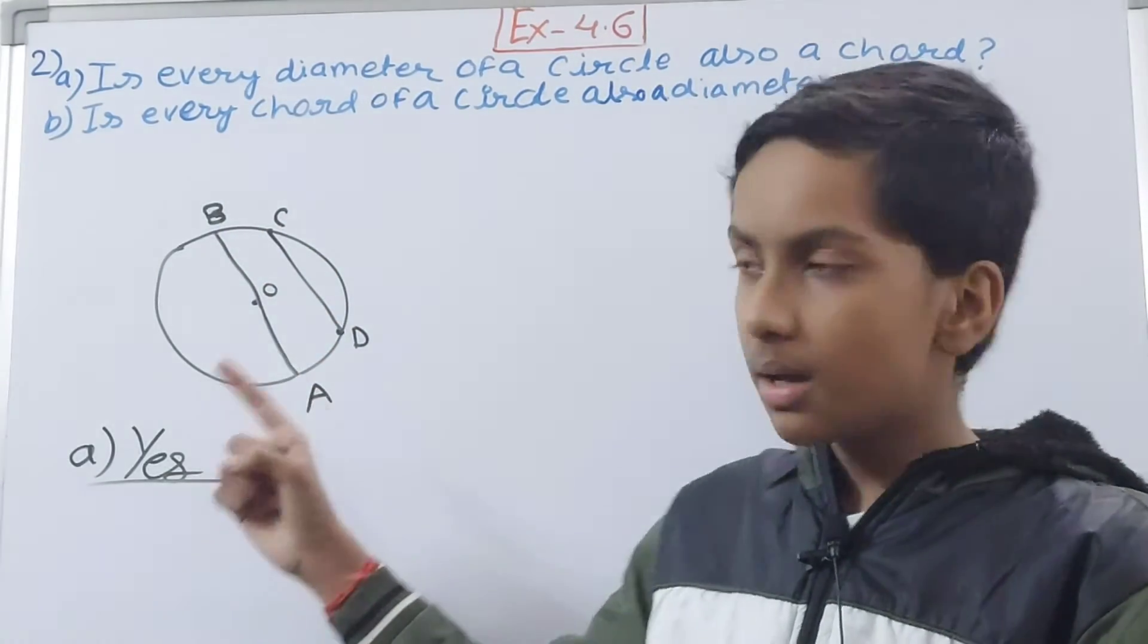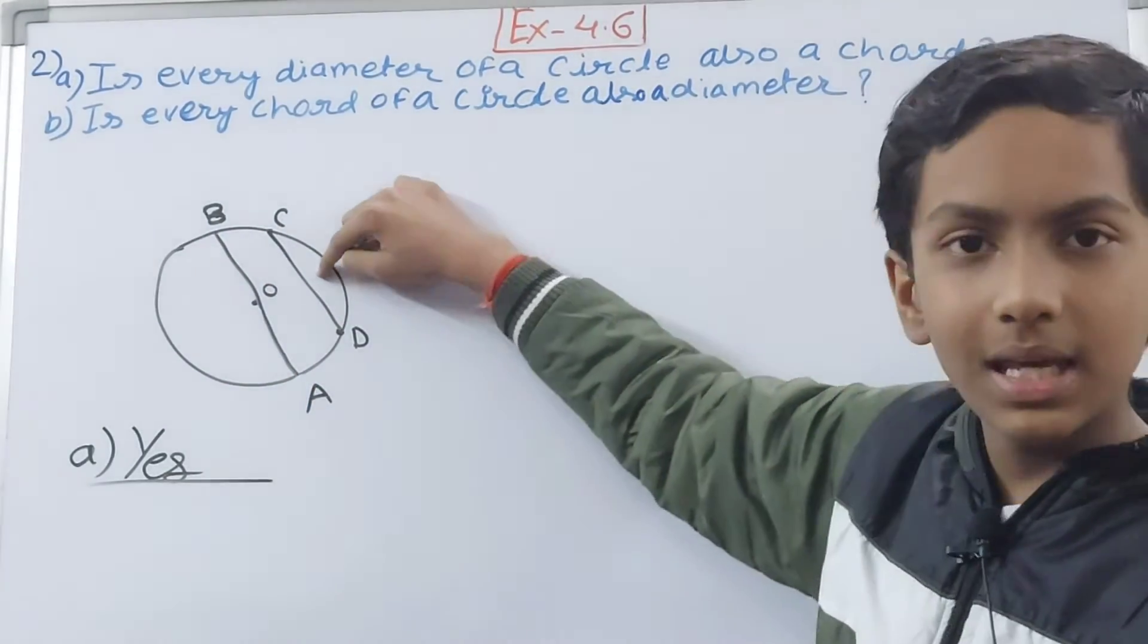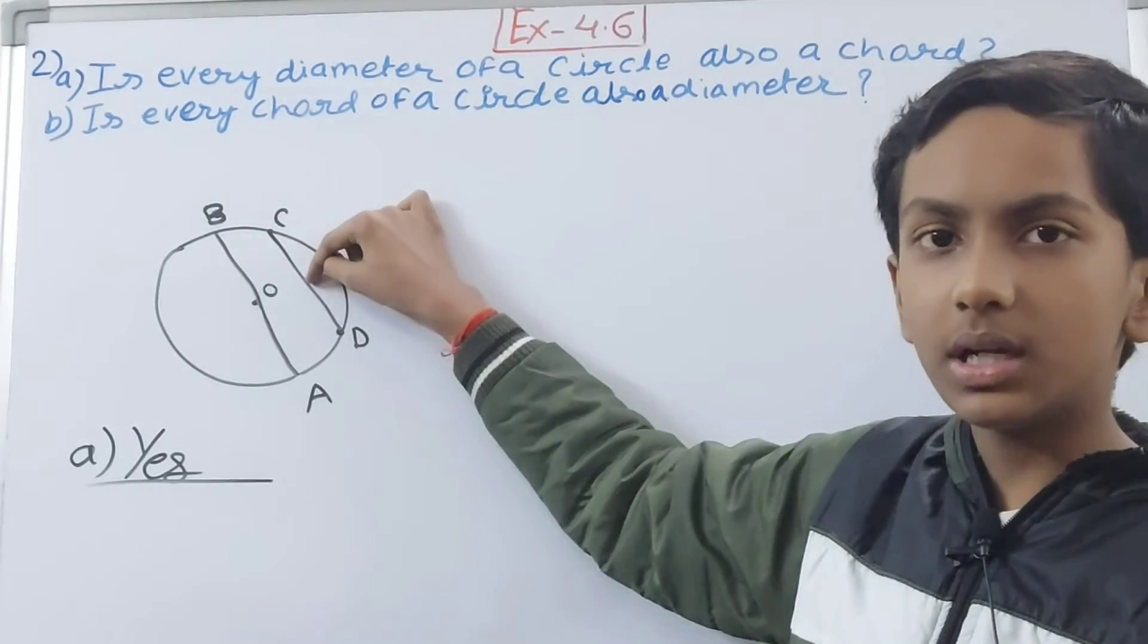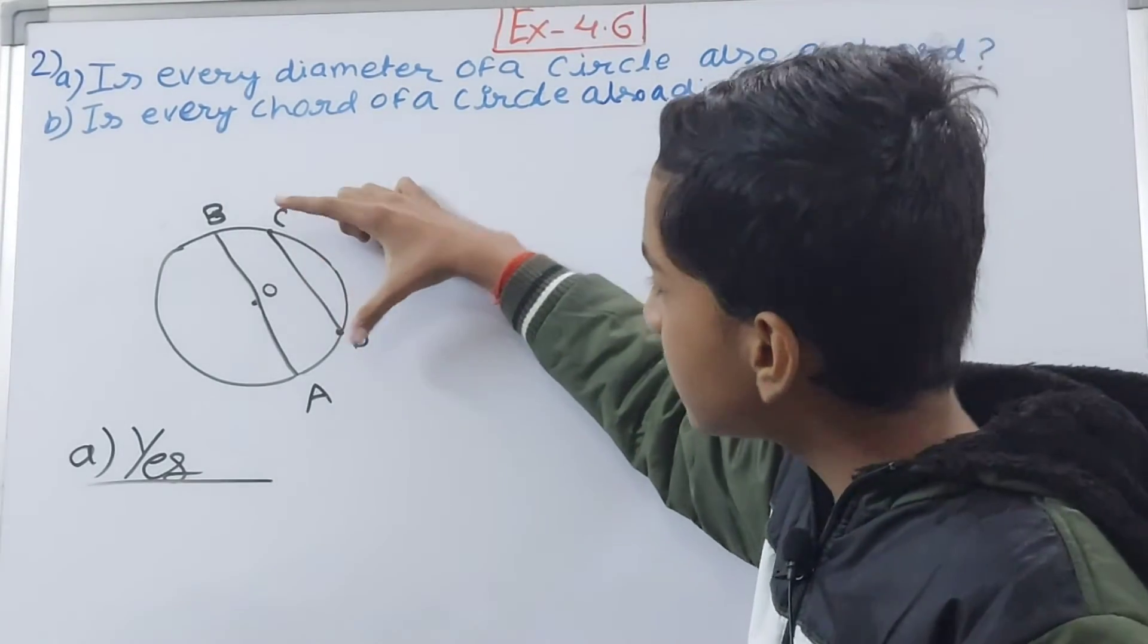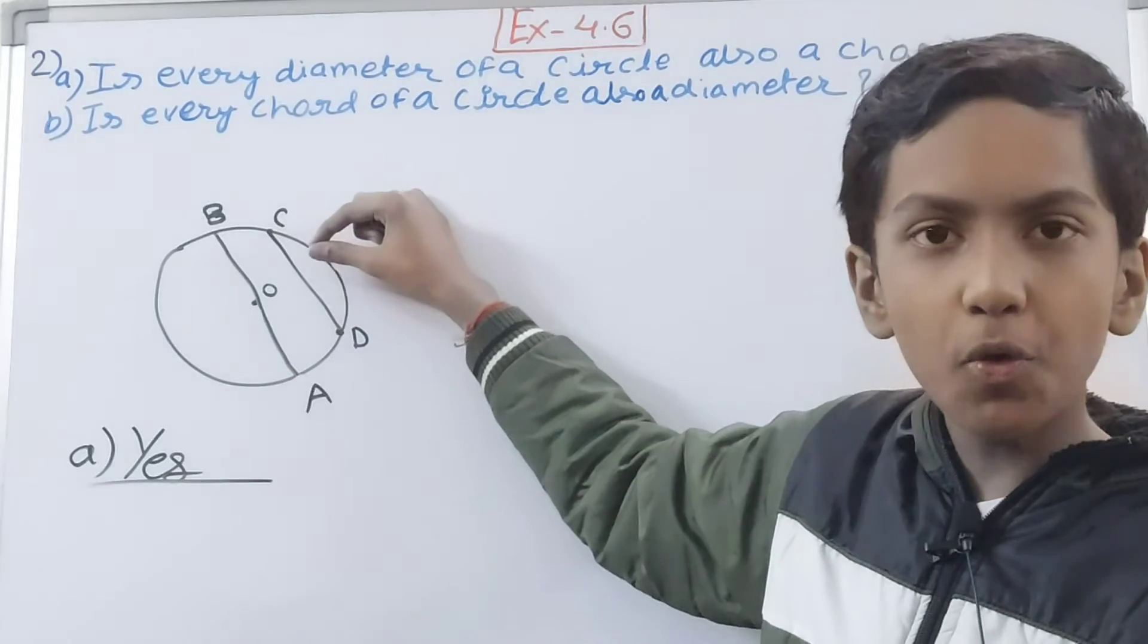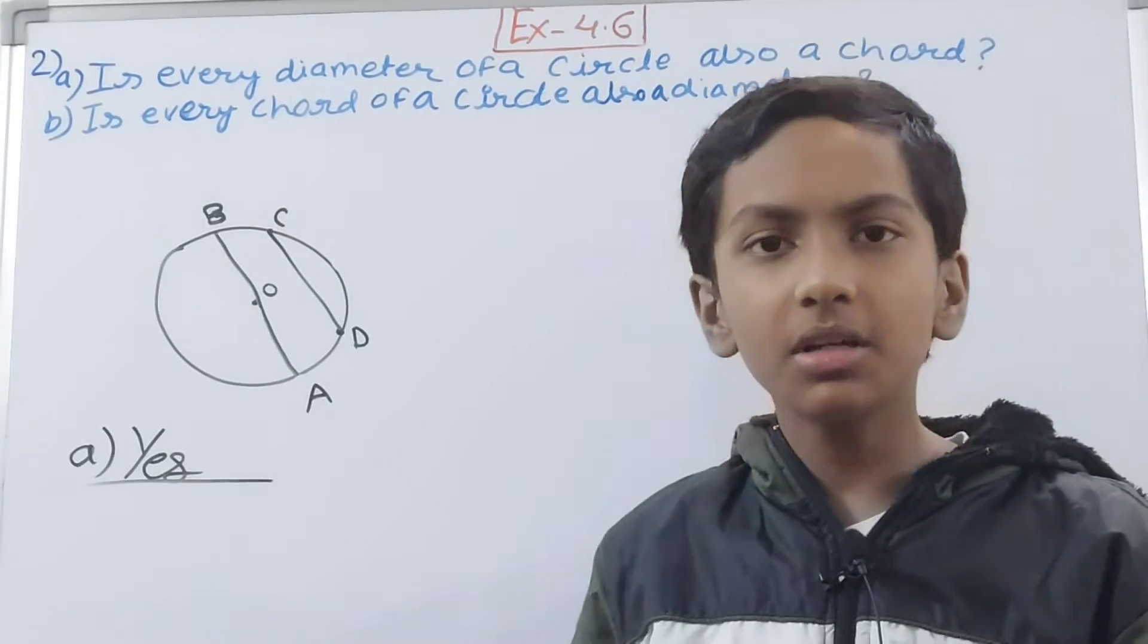So this will be a chord as well and it will be a diameter as well, right? But if I make this chord here which is not passing through the center but instead it is a straight line and connecting two points on the boundary, is it a diameter?